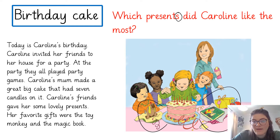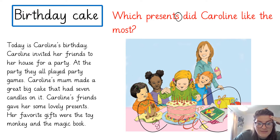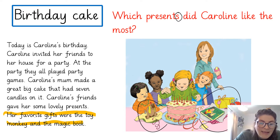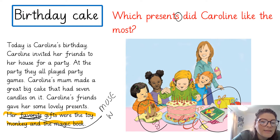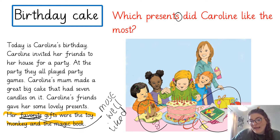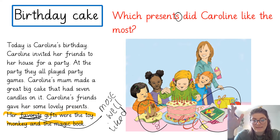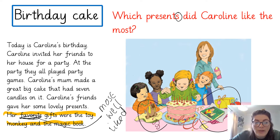So I'm going to read through the text to find which presents she liked the most. Her favourite gifts were the toy monkey and the magic book. Now, the question doesn't say which presents were her favourite — it says which did she like the most. The word 'favourite' means most well liked. So although the question doesn't use the word 'favourite', I know that's what it means. Her favourite gifts and the presents she liked most were the toy monkey and the magic book.